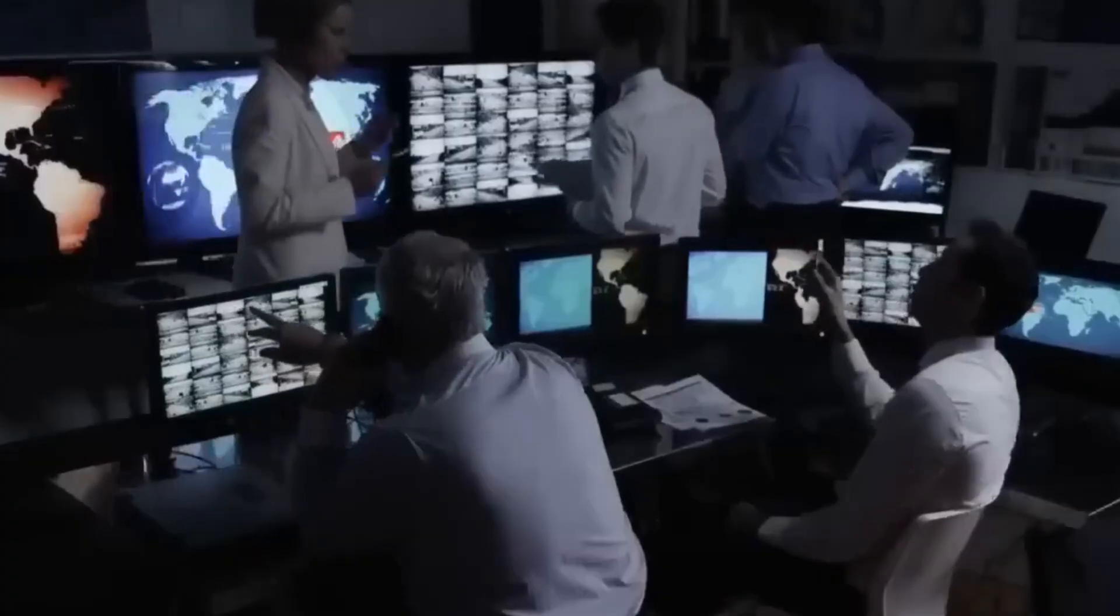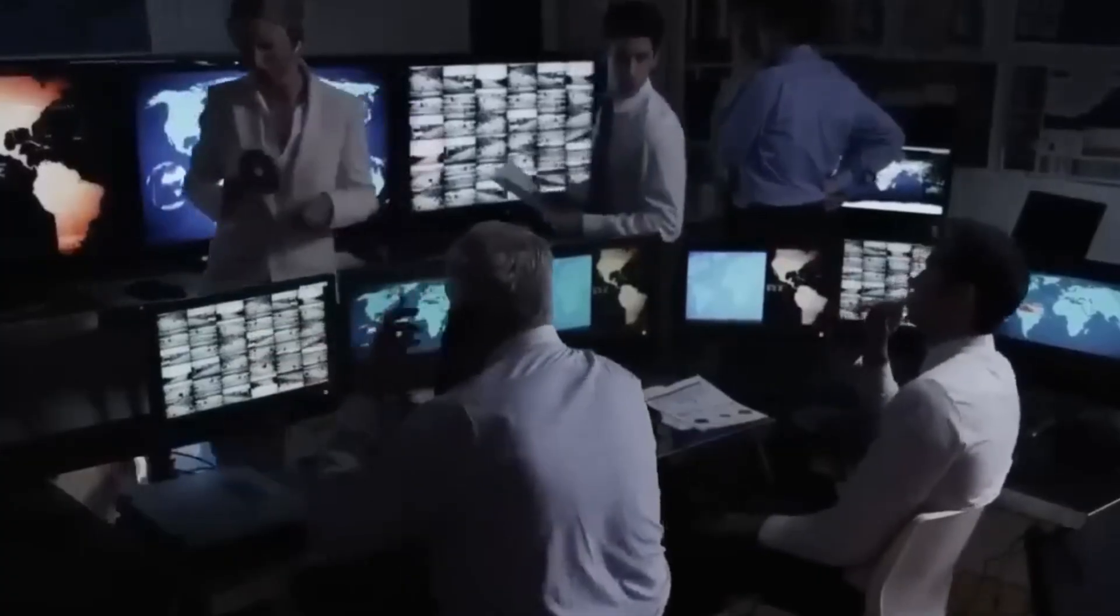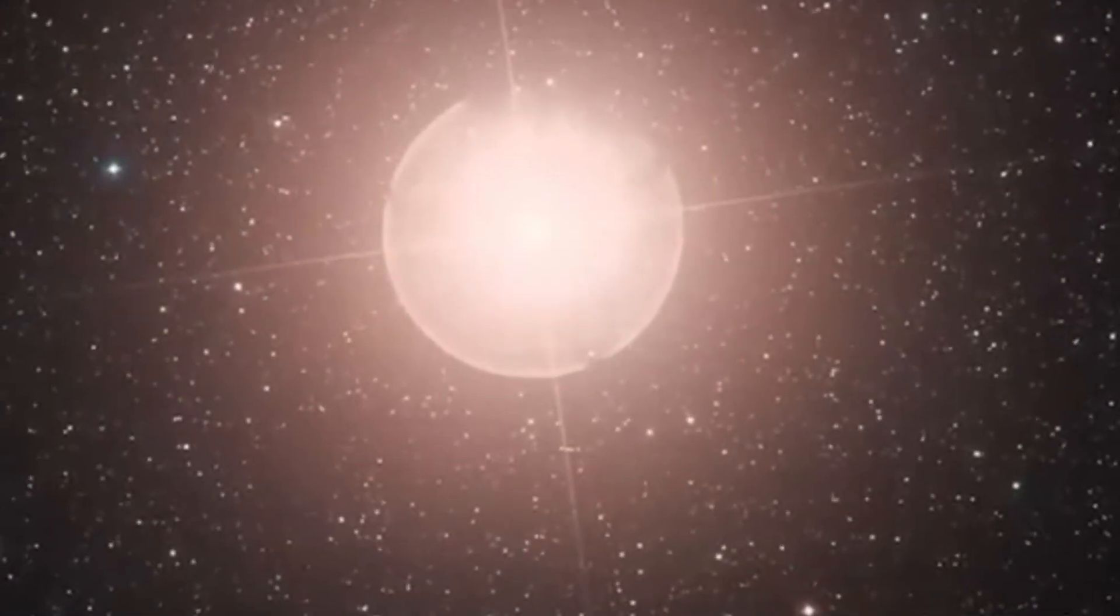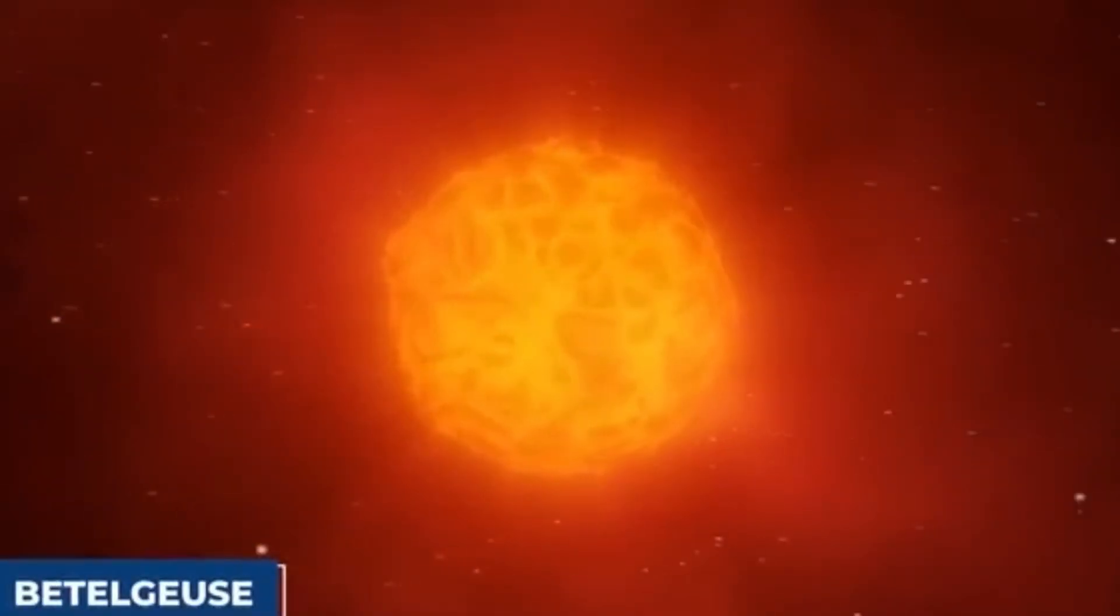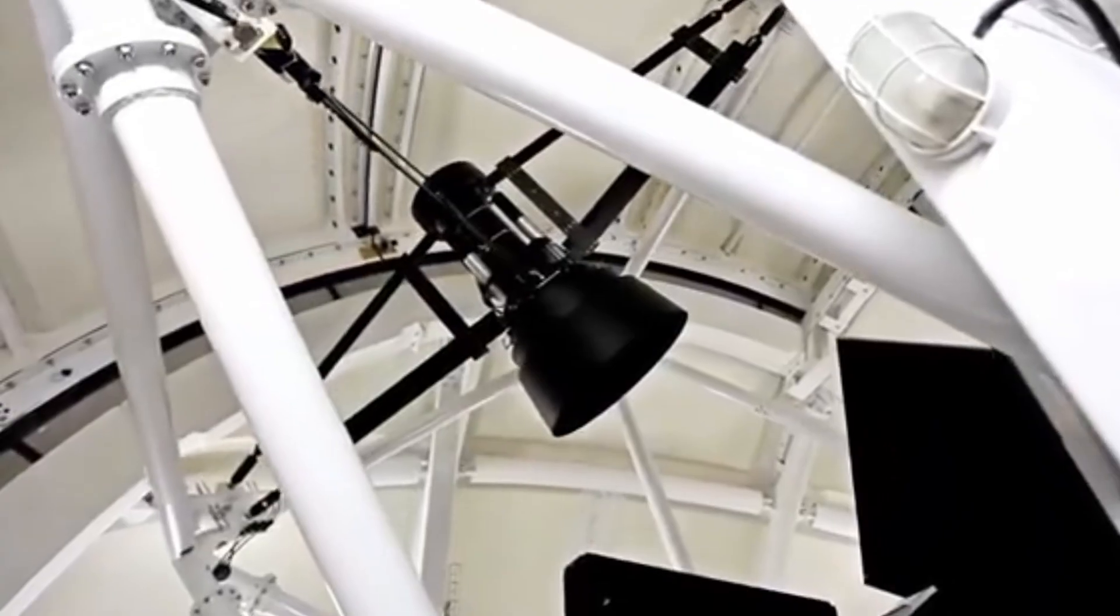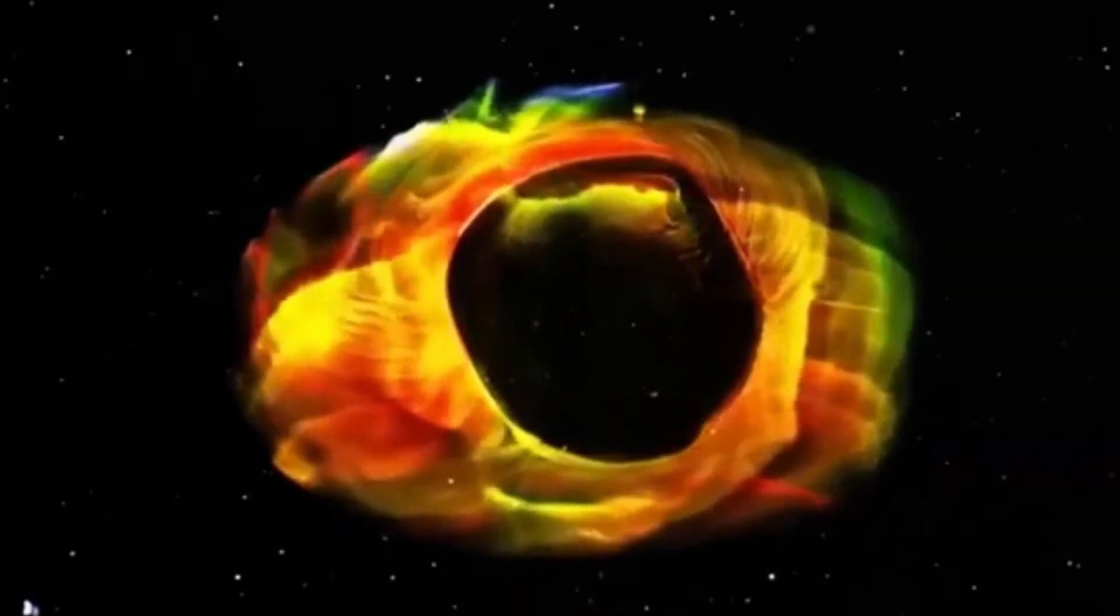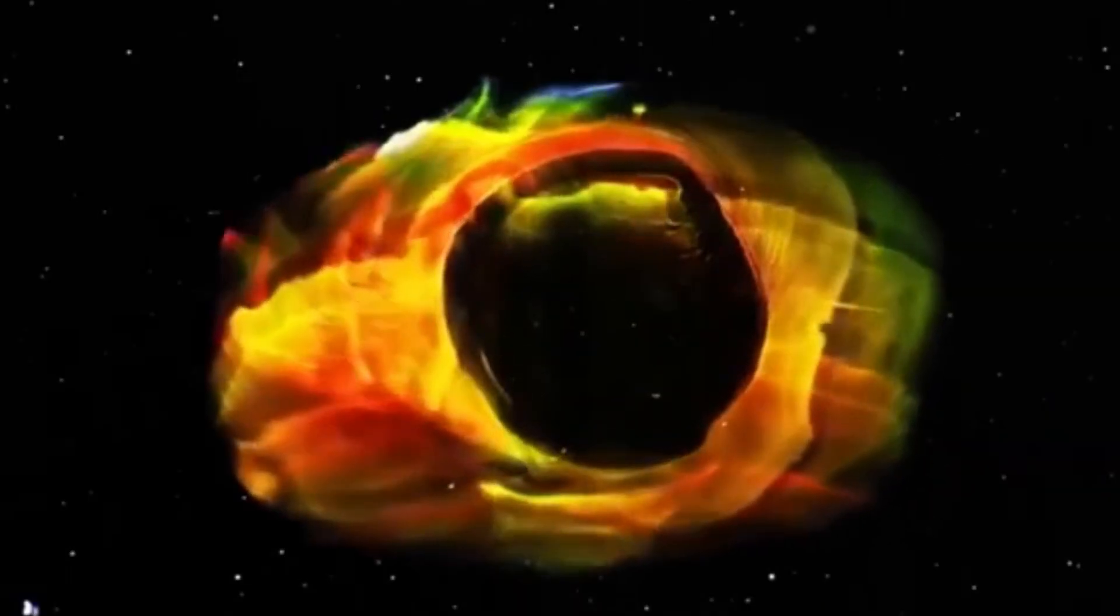Betelgeuse isn't just any ordinary star. It's what we call a red supergiant, and it's absolutely enormous. If you placed Betelgeuse where our sun is right now, it would swallow up Mercury, Venus, Earth, and Mars completely. It would extend all the way out to somewhere between Mars and Jupiter. That's how massive this thing really is.